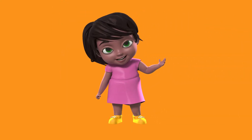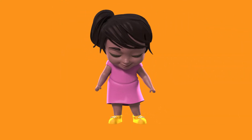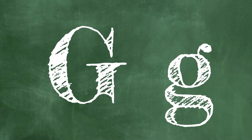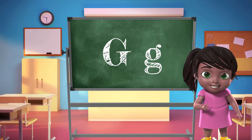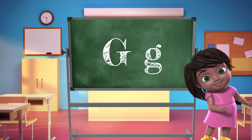Great job friends! Let's see what the next letter is. The seventh letter of the alphabet is G. The first one is an uppercase and the second one is a lowercase. Now we are going to learn a few things that begin with the letter G.